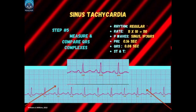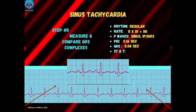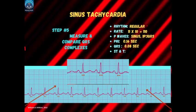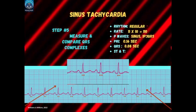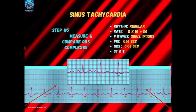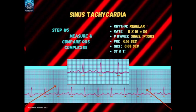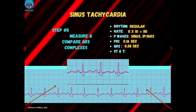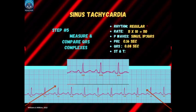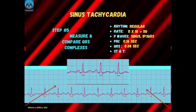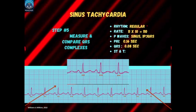Step 5 is to measure the QRS interval. The QRS complex measures two small boxes, which multiplied by 0.04 seconds gives a QRS width of 0.08 seconds. Comparing all QRS durations on the six-second strip shows a variation of 1.5 to two small boxes, giving 0.06 to 0.08 seconds for the QRS complex durations. Since the difference is only half a box, the QRS interval is still considered normal.